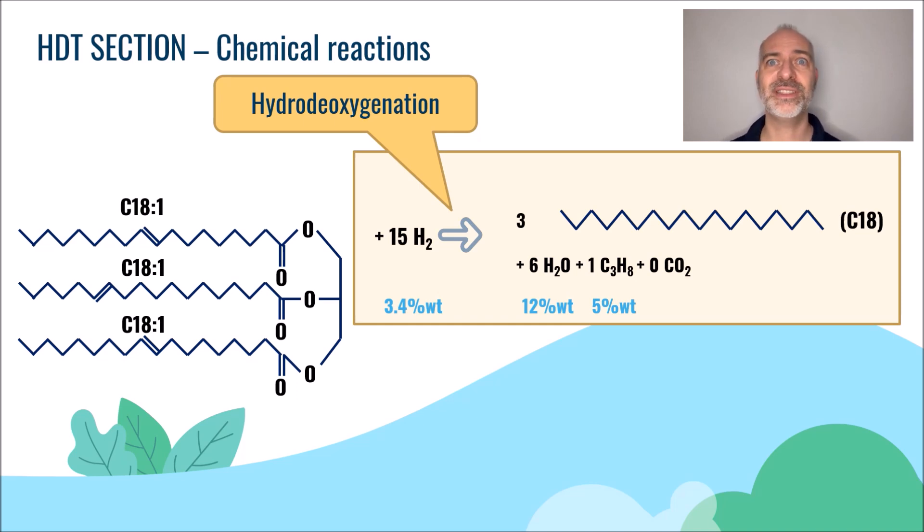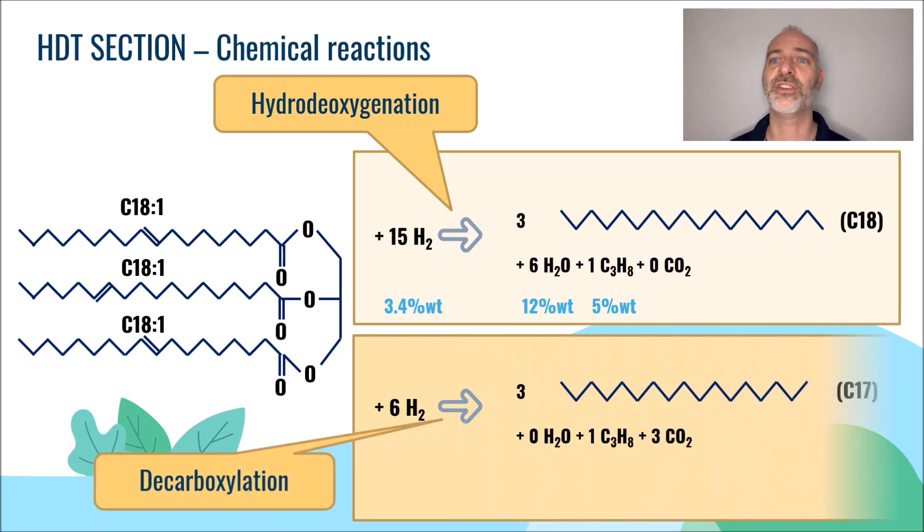However, we also have a decarboxylation reaction that is in competition. This reaction consists in letting six hydrogen molecules react with a triglyceride. It leads to the formation of propane, about 5 weight percent, just like hydrodeoxygenation, CO2 for about 15 weight percent, and three saturated C17 molecules. Remember, it was C18 for hydrodeoxygenation. Indeed, this time hydrogen did not combine with each oxygen atom to produce water, but we have a production of CO2 which contributes to consume only 1.4 weight percent of hydrogen compared to the feed.